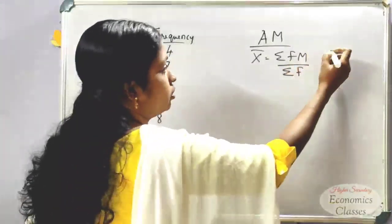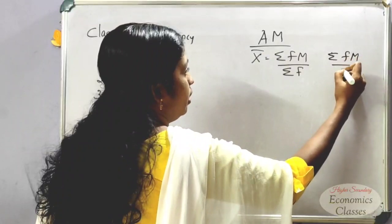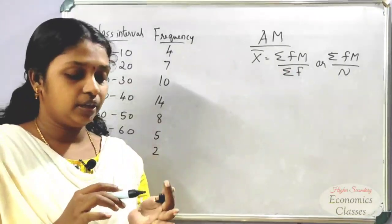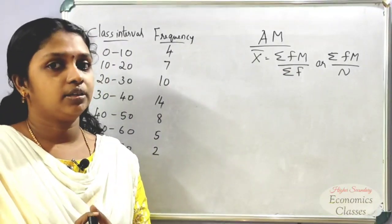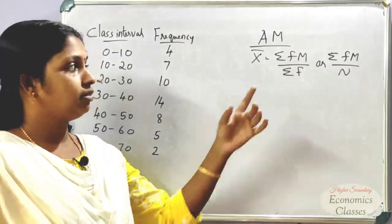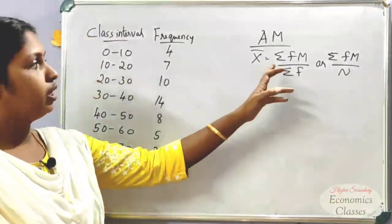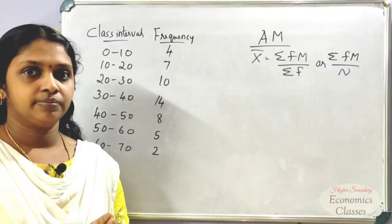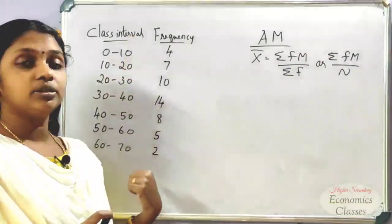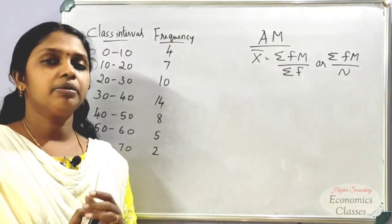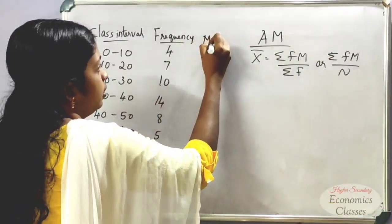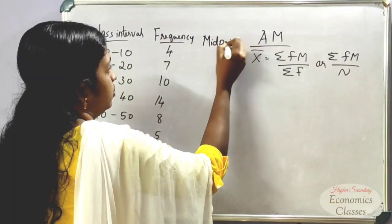We have to find n, which is the total frequency, that is Σf. We also need to find the midpoint values, which are the x values. We find the midpoint directly for each class interval.